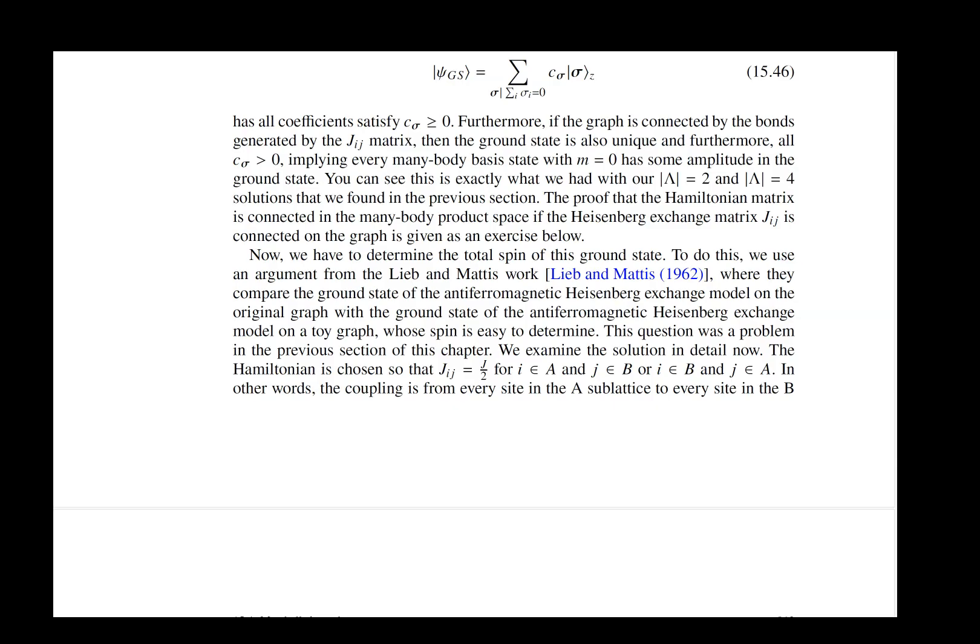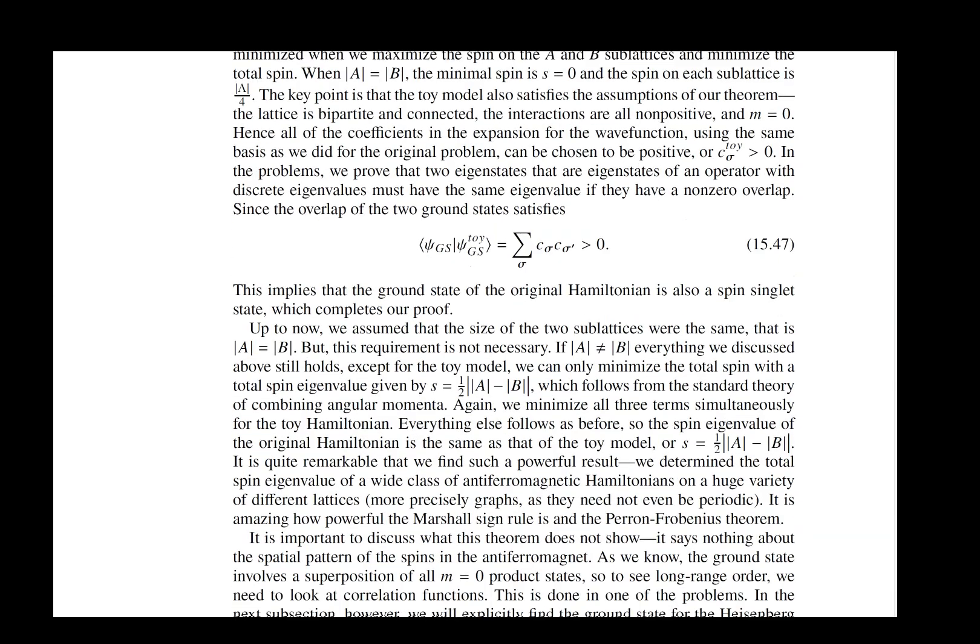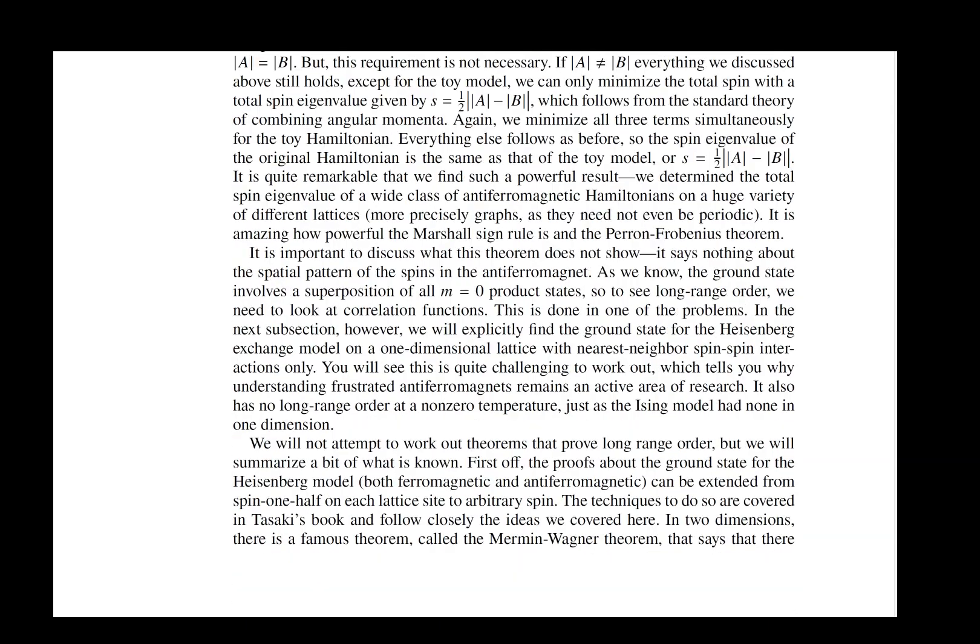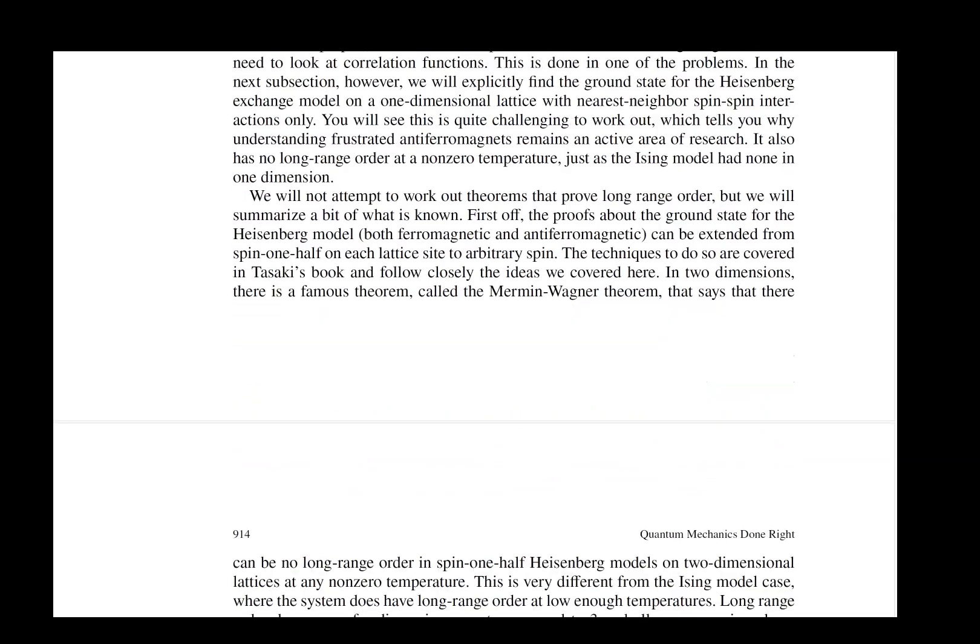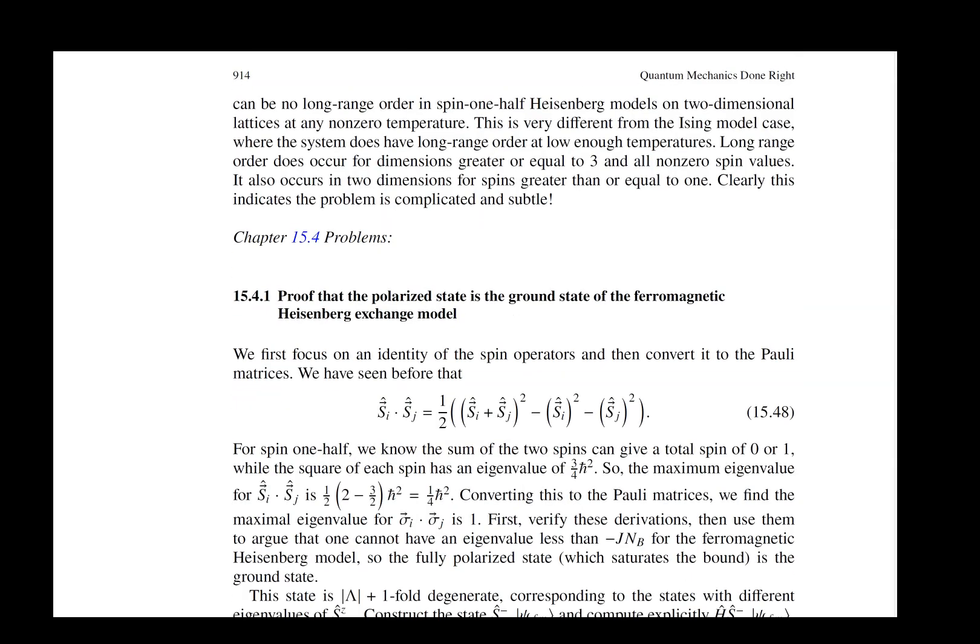What that means then is that you can look at determining the quantum number of that state by finding another state that has a non-zero overlap with the state that is the ground state of the model that you're looking at. And that's the technique that's used to determine the spin of the state. It's a clever argument by Lieb and Mattis that allows you to go through and determine what the quantum number of the ground state is.